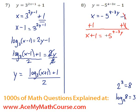Great, now I'm going to divide both sides by negative 1 to get rid of this negative here. So we're going to get negative x minus 1 equals 5 to the power of 4 minus 3y.